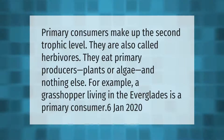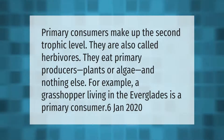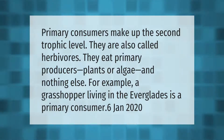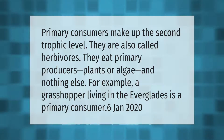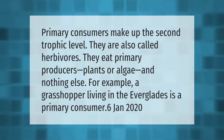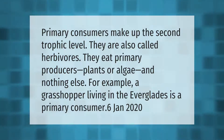Primary consumers make up the second trophic level. They are also called herbivores. They eat primary producers — plants or algae — and nothing else. For example, a grasshopper living in the Everglades is a primary consumer.